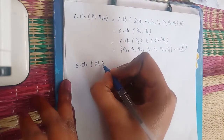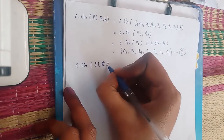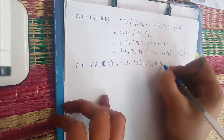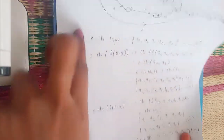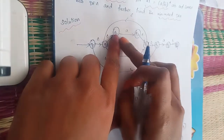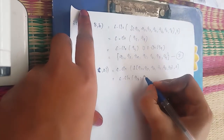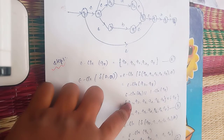Now E-closure of δ(C, a) — δ({Q1, Q2, Q4, Q5, Q6, Q7}, a). On input a, Q2 goes to Q3 and Q7 goes to Q8. So E-closure of {Q3, Q8}, which is already found as state B. So δ(C, a) = B.